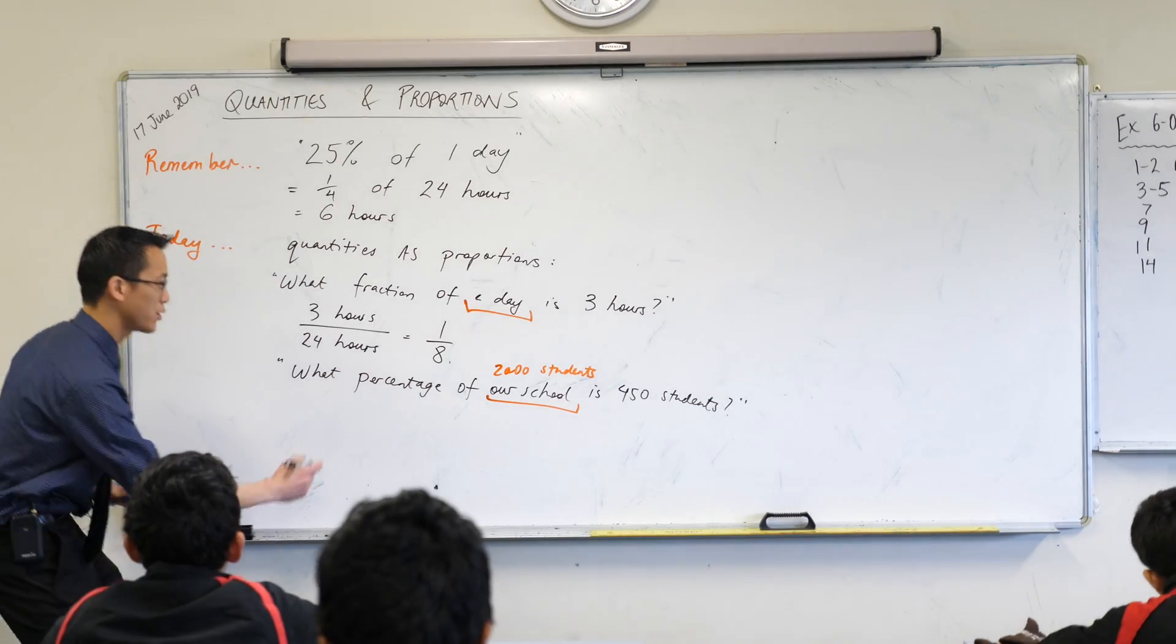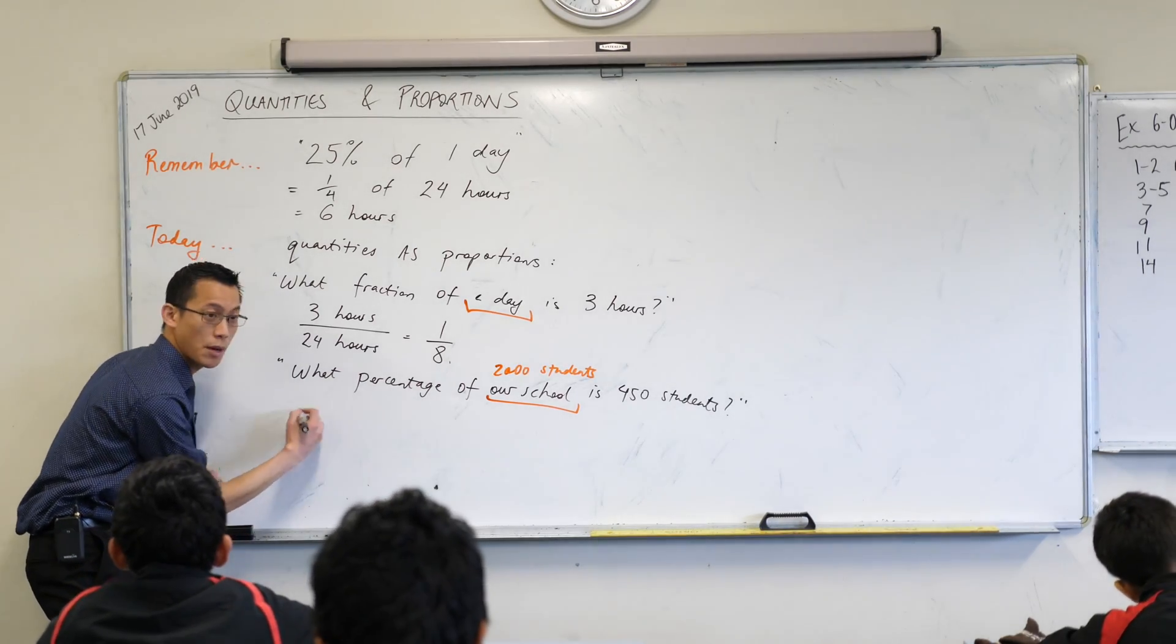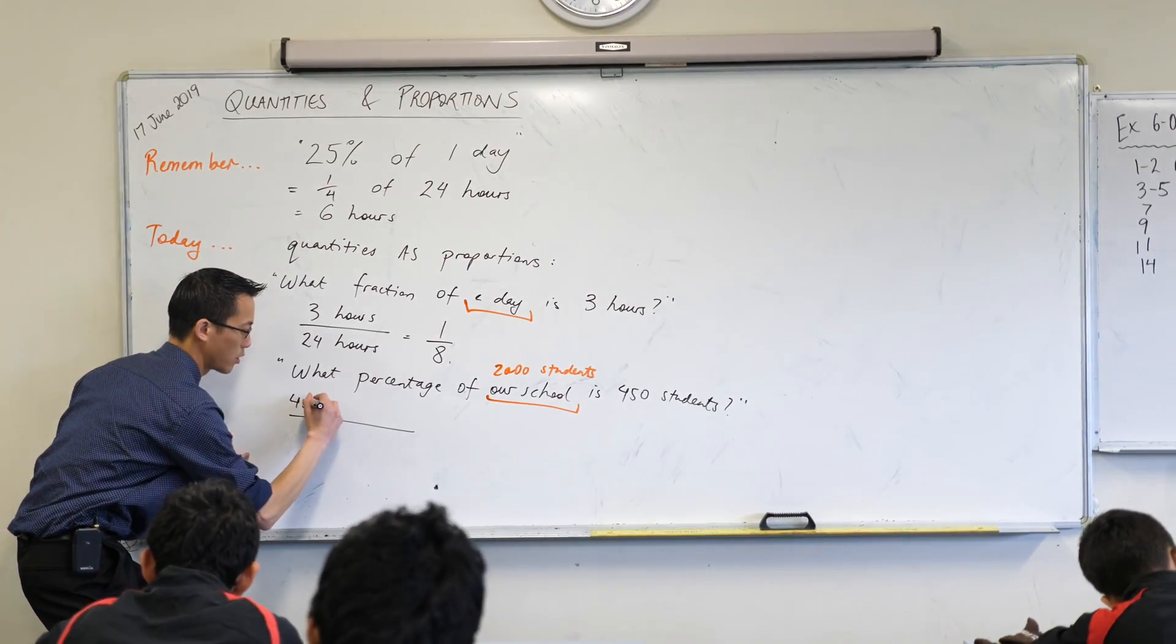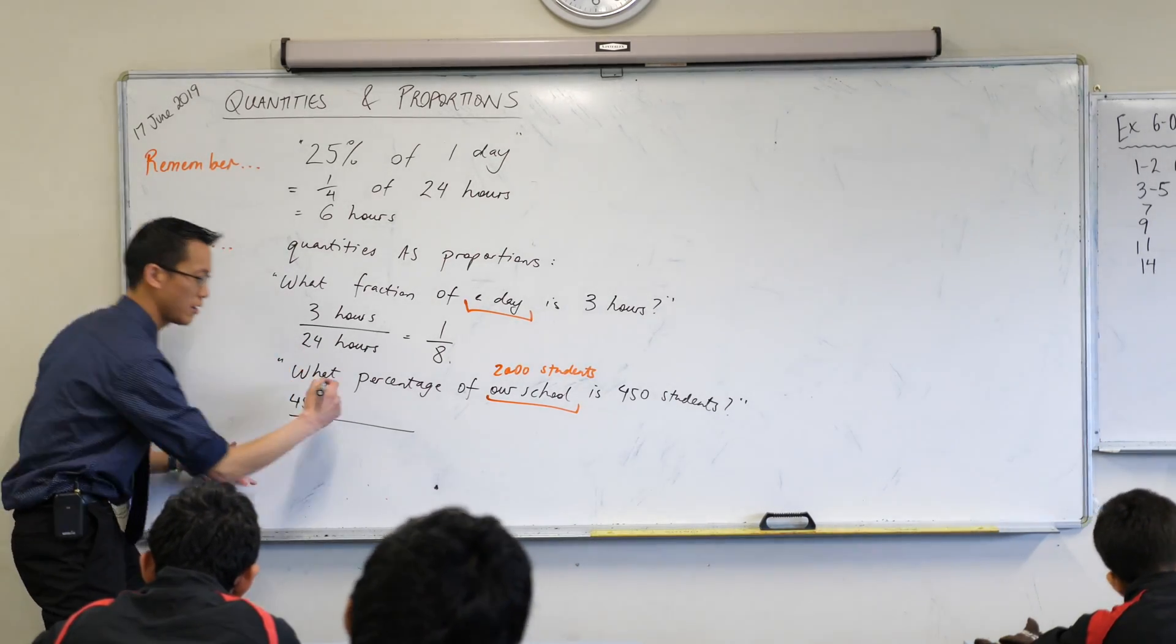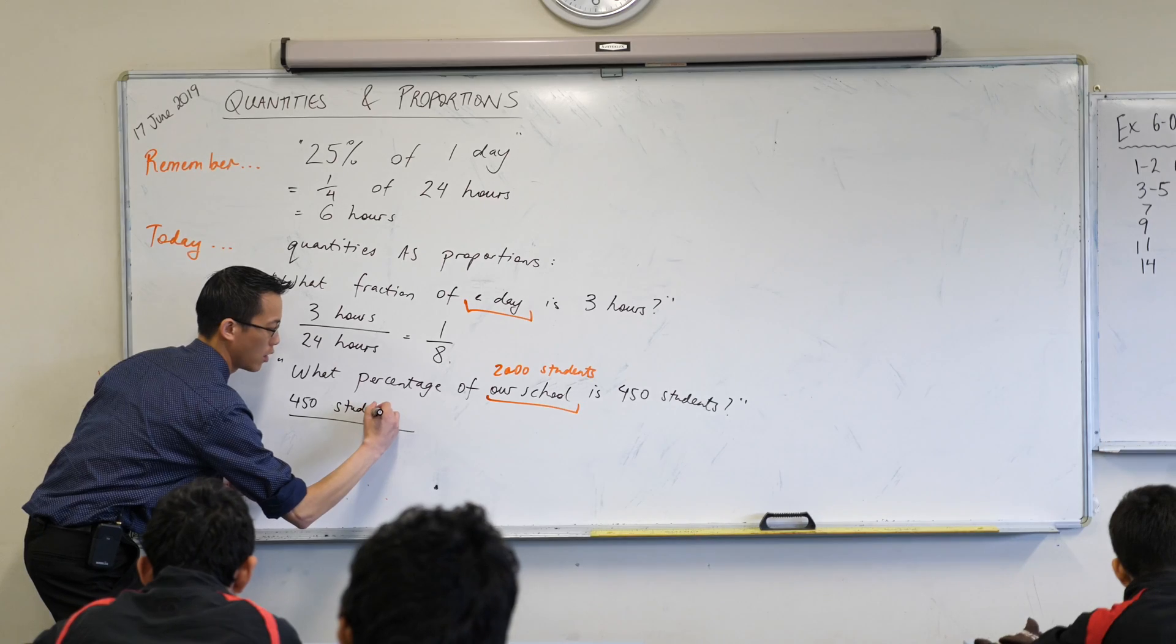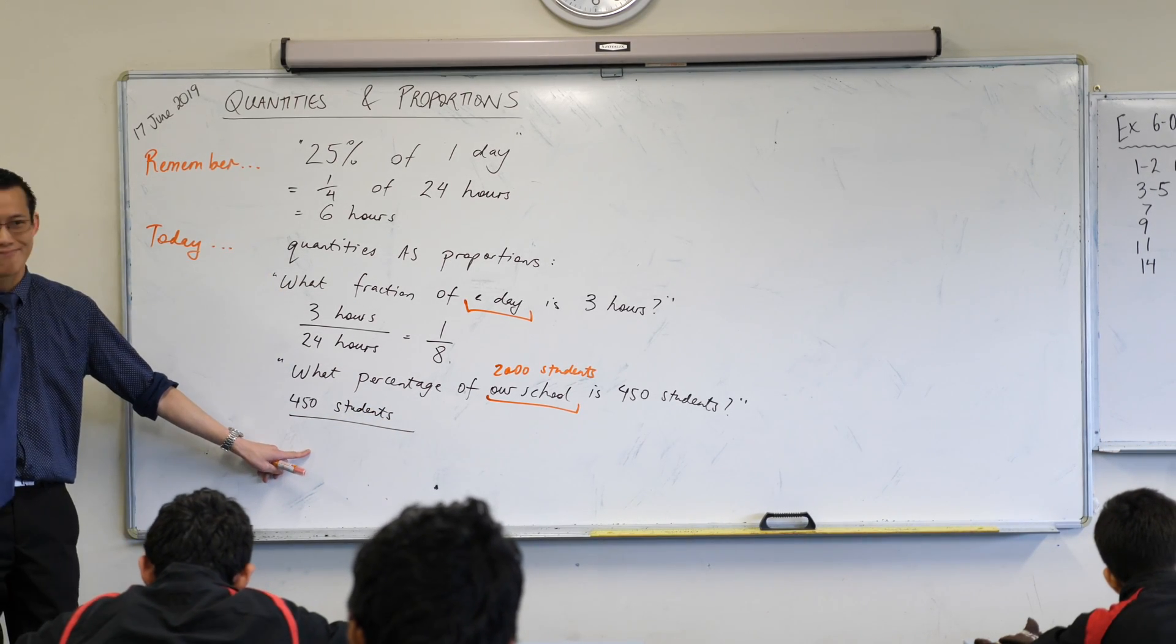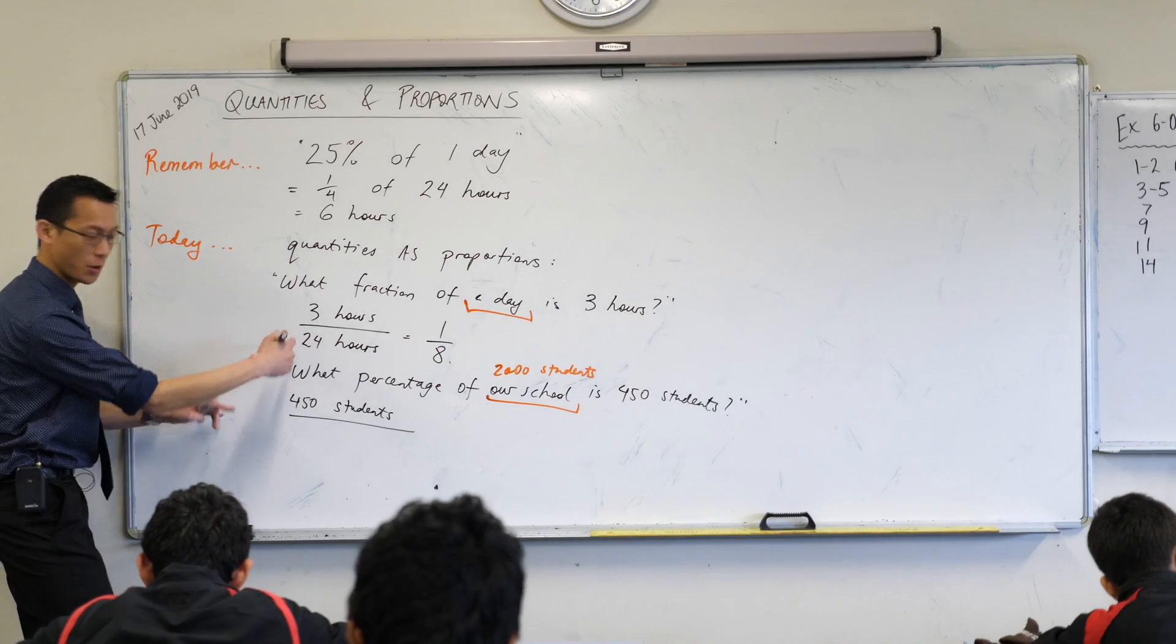One of the most important parts of answering any questions like this is, you've got to know what the whole unit is. If I asked you what percentage of Cherrybrook, which is a whole lot more people than just our school, then your answer would be different. And this of course is 2,000 students. We'll just use that approximation for now. I think we're just a bit over, but that's okay. So again, in my answer, I'm going to say on the numerator, what number do I put up the top? 450. 450, thank you very much. That's the quantity that I'm sort of focusing on. It's not just 450, it's 450 students. And then what's on the bottom? 2,000 students.